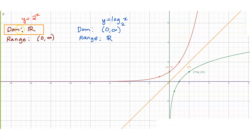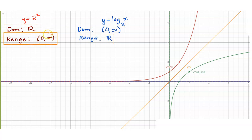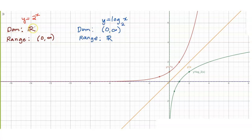Notice that the domain of the exponential function is the set of real numbers, and that is the range of the logarithmic function. The range is 0 to infinity for the exponential function, and that will be the domain of your logarithmic function. So the domain and range of y equals 2 to the x and y equals logarithm of x to the base 2 will just be interchanged — that is the property of inverse functions.